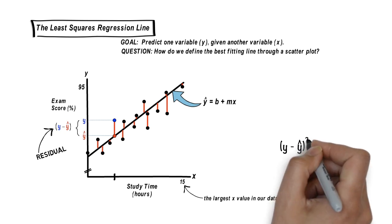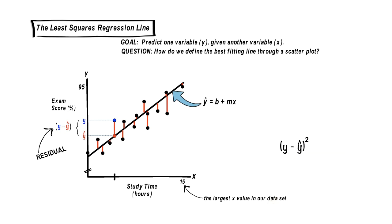Second, we square each of those residuals. Keep in mind, we wanted each residual to be small, which means we'll want each squared residual value to be small as well.